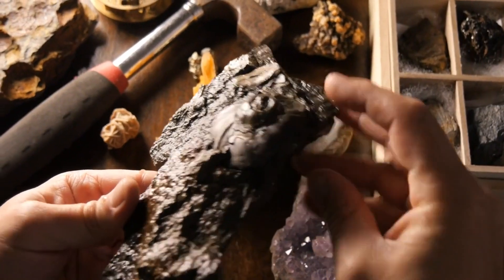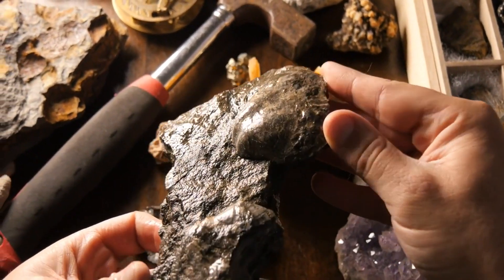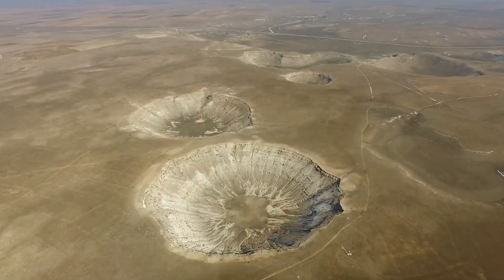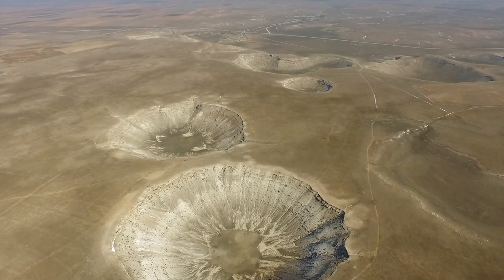Known as the Cretaceous Paleogene extinction event, this impact is believed to have wiped out 75% of all species on Earth, including the dinosaurs. This wasn't just a bad day in Earth's history. It was the defining moment that shaped the planet as we know it today.